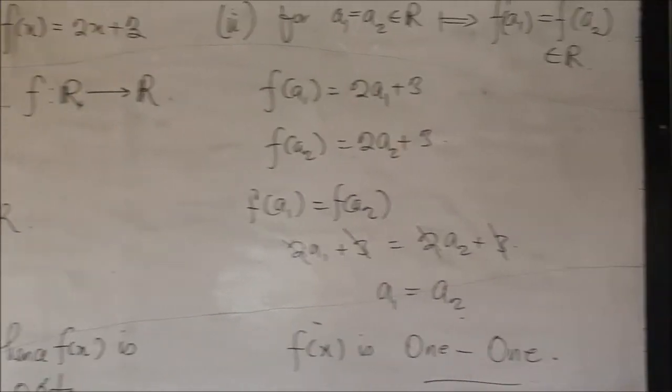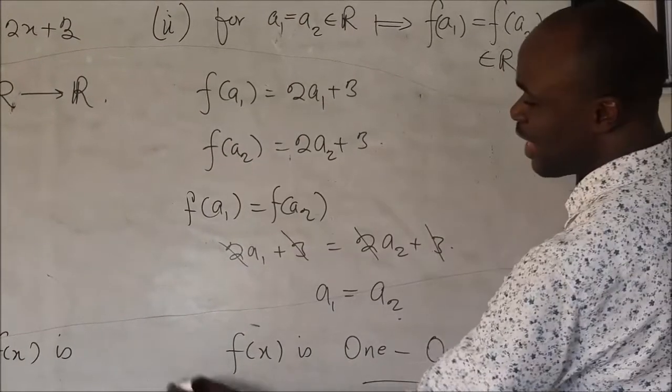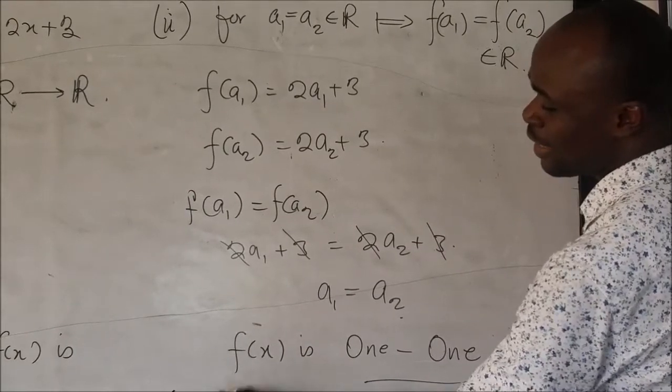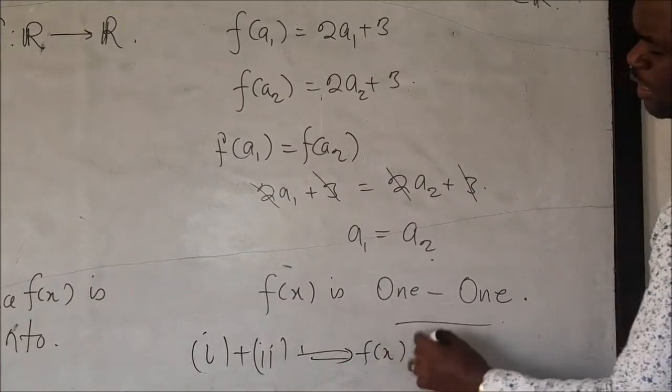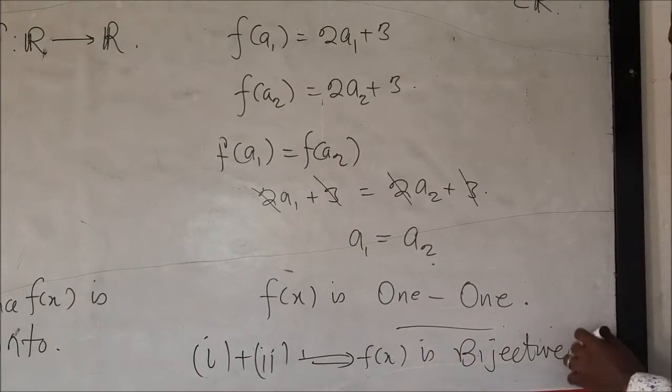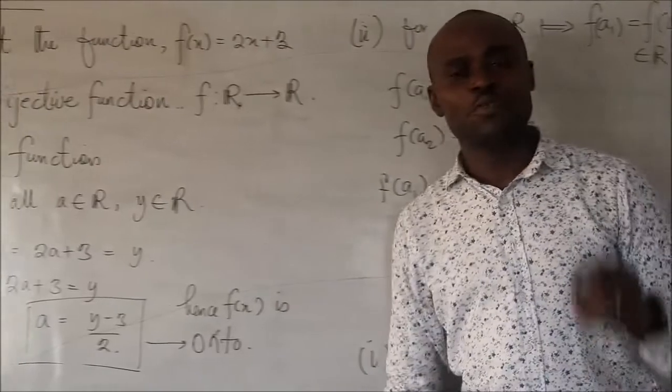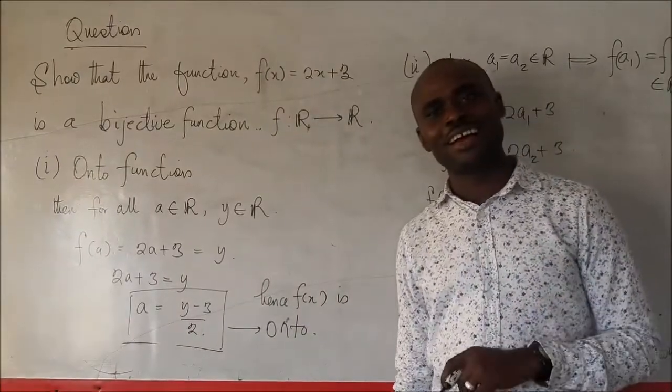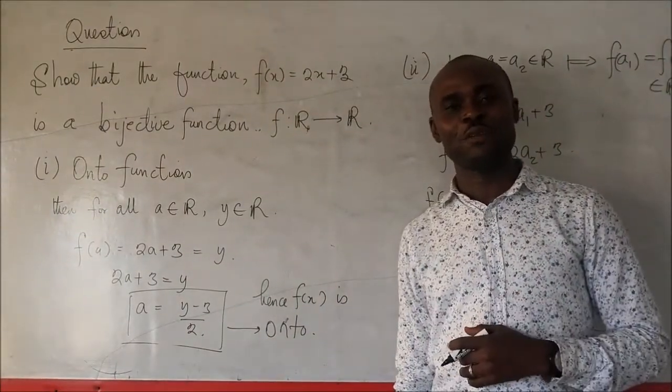Now, with these two conditions being satisfied, adding I plus II, it follows that F of x is bijective. F of x is bijective. Remember to always share the video, like, and also subscribe. Thank you very much, and bye.